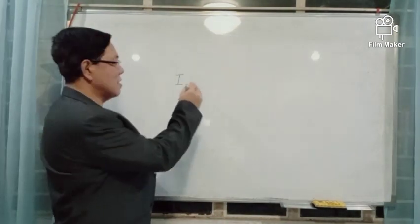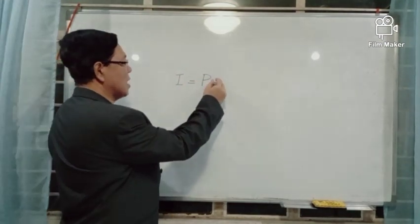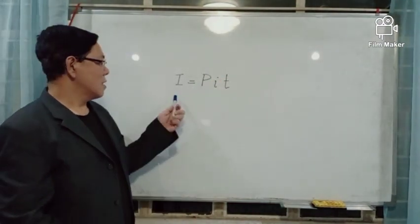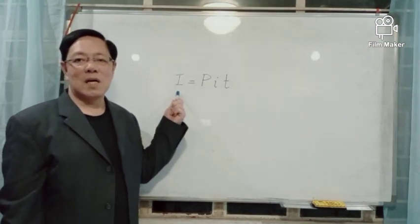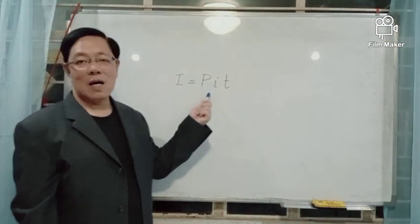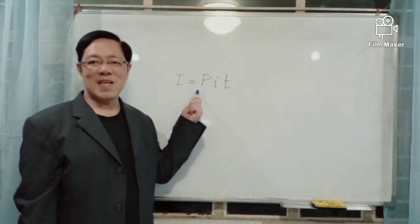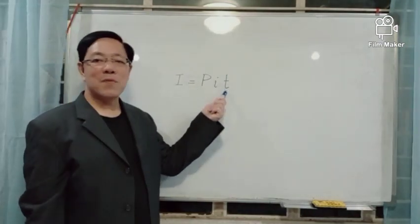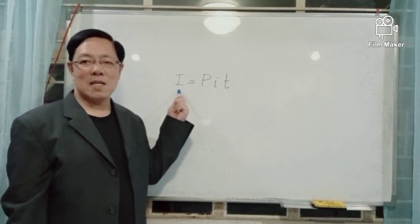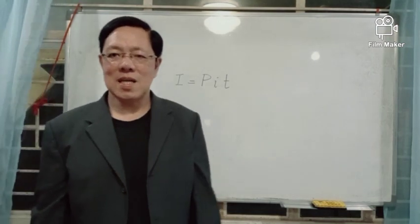Capital I equals P multiplied by small letter i multiplied by T. This is the formula used to calculate the amount of interest at the given interest rate for the principal invested for time T in years. Capital I here is the amount of interest, or simply interest.